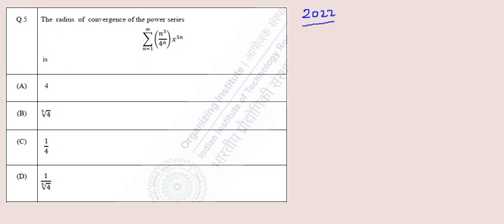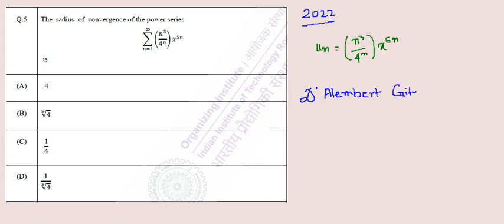Let us consider a series. We define this series as u_n = n³ · 4^n · x^(5n). According to D'Alembert's criterion — also called the D'Alembert ratio test of convergence of series — we will determine convergence.